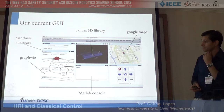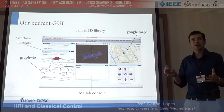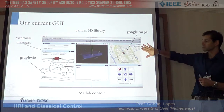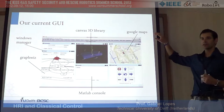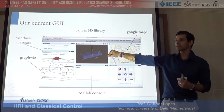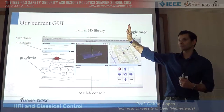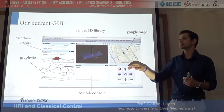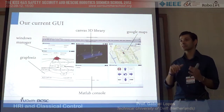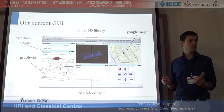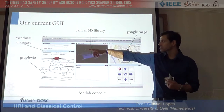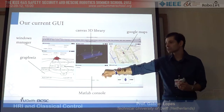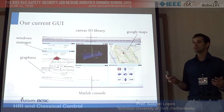Our current GUI was actually built quite fast once we had the idea — because all these libraries already exist. Here you see Google Maps; we just went to the Google website and used the API. Here you have some 3D graphics from a library we found online. We have GraphViz, which allows you to generate things like finite state machines and arranges the layout for you. We have a JavaScript window manager we found online, and a MATLAB console so you can talk to MATLAB. Everything can be integrated in a single page. It's very simple.